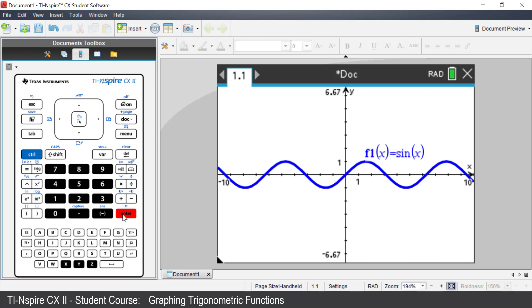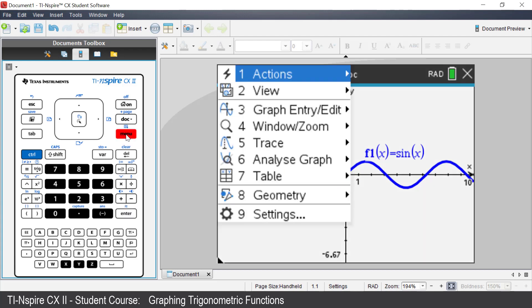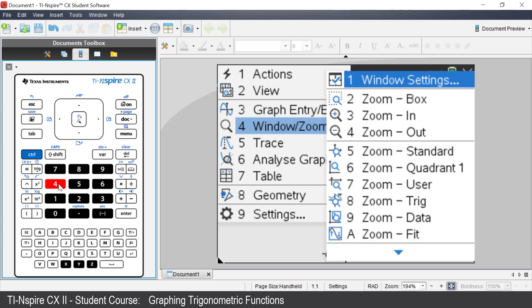The graph of sin(x) has been plotted with the standard window. To change the window settings, press menu. Select window zoom. There are many options to pick from. In this instance, select window settings.